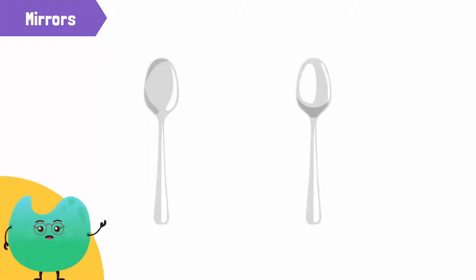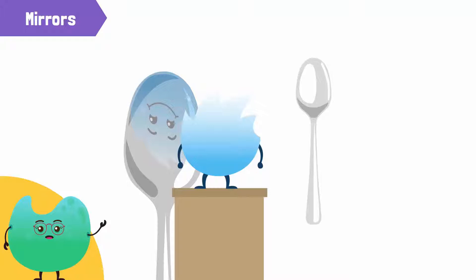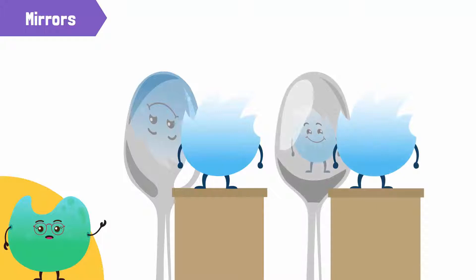Have you ever looked at your reflection in a spoon? What does it look like? The front of the spoon shows an upside-down image, while the back of the spoon shows a smaller, upright image.